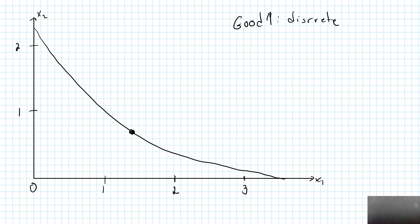Well, the bundle that I have marked up is no longer available. Our consumer can no longer consume 1.4 units of good 1. She can consume 0 units of good 1 and 2.2 something units of good 2 that would be on the indifference curve.